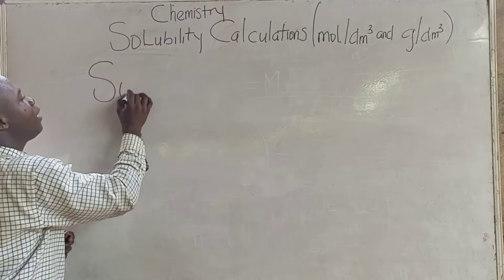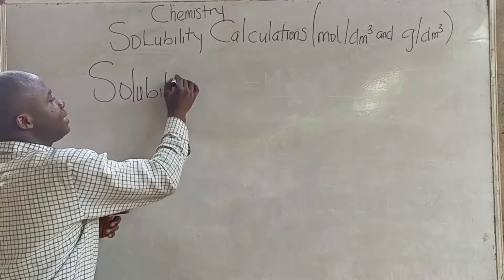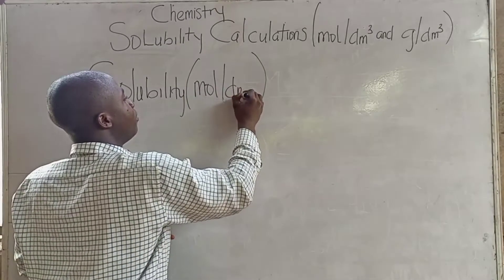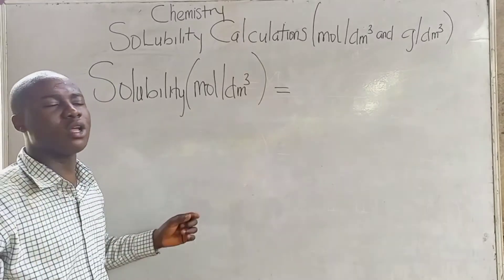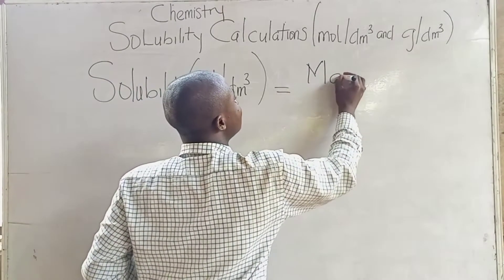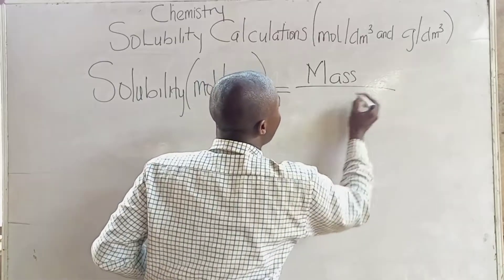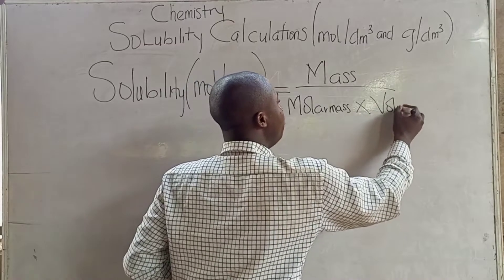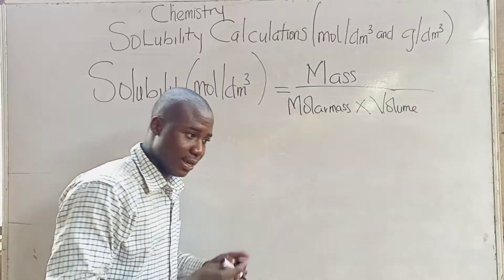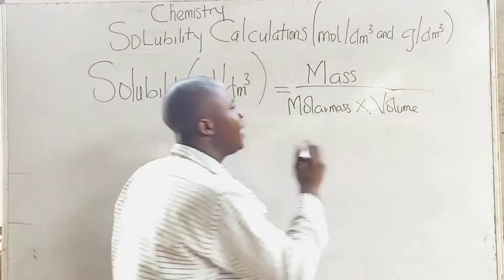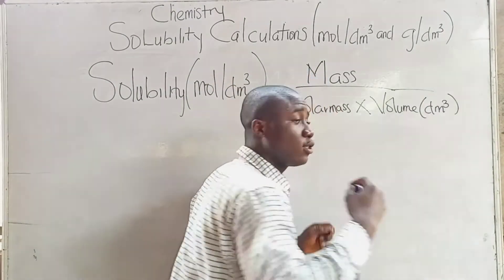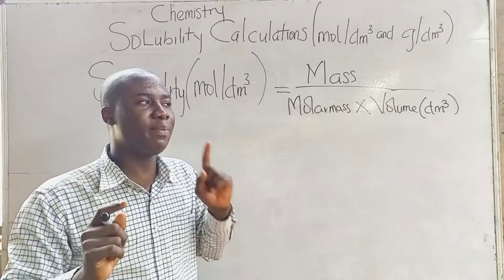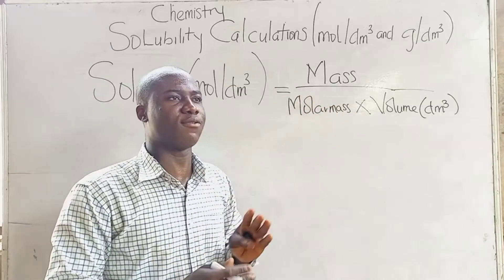To calculate solubility in moles per dm³, we simply use this formula: solubility in moles per dm³ is equal to mass over molar mass times volume. In this case, the volume should be in dm³. This is something we should take note of. Whenever we are solving a solubility question and the volume is in dm³, we go with this formula.